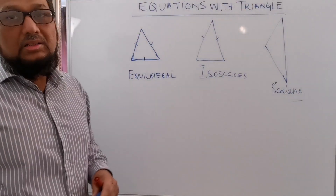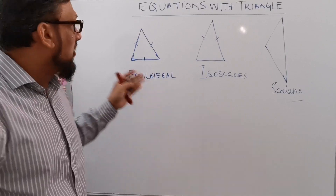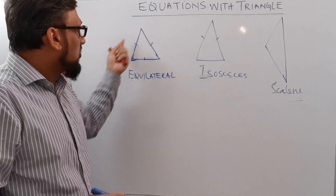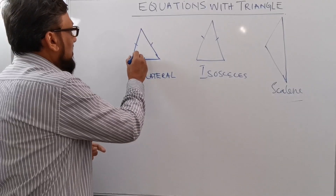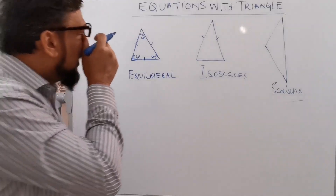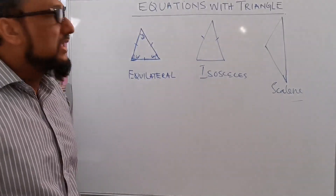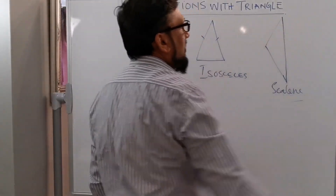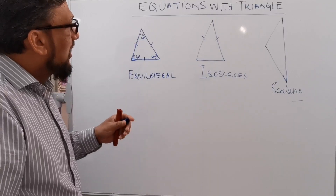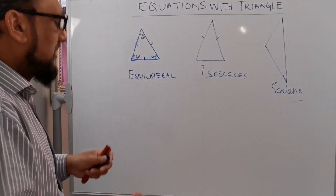So basically there are three types of triangle. The first one is equilateral triangle — all sides are equal, so 180 degrees total and each angle is 60 degrees, which I already discussed in my last video. Isosceles has two angles that are equal, and scalene has all angles and all sides different.